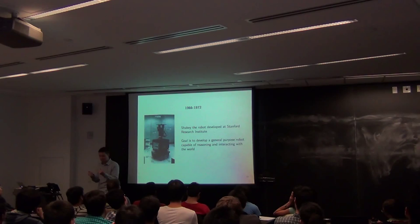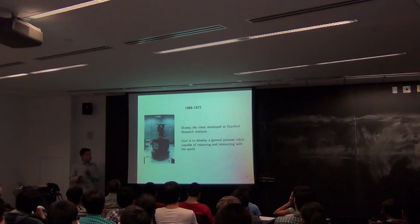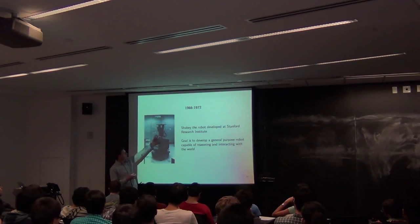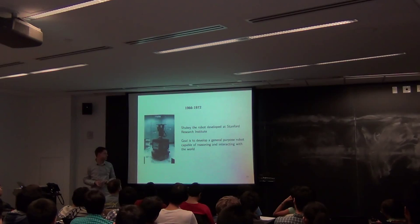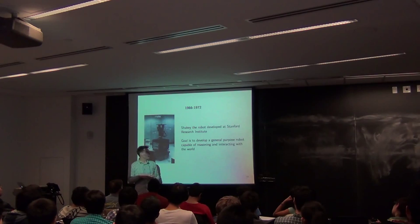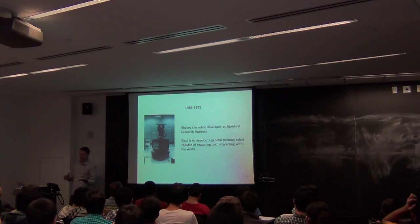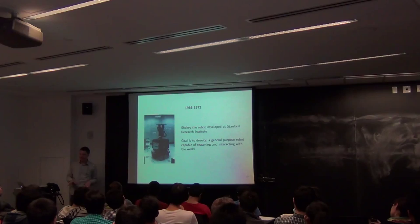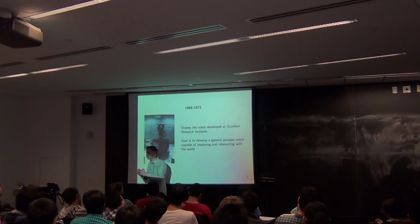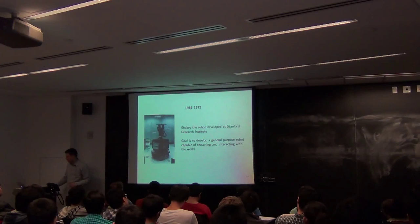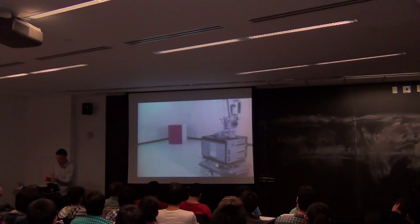Taking a different path now — concurrently there was a lot of progress in robotics. One of the first general-purpose robots was Shakey, developed at Stanford Research Institute. The goal was to develop a general-purpose robot capable of interacting and reasoning with the world. I'm going to play a video about Shakey — it's about five minutes long, but it covers so many things that are still relevant to AI today. They were already thinking about these things 50 years ago.